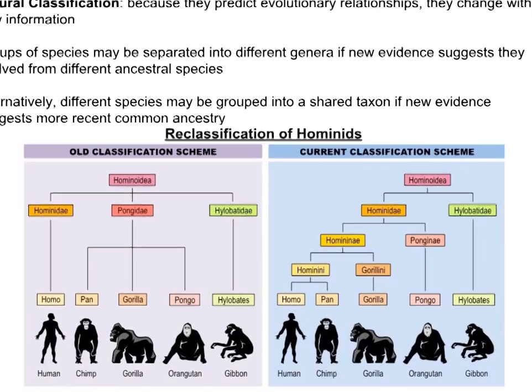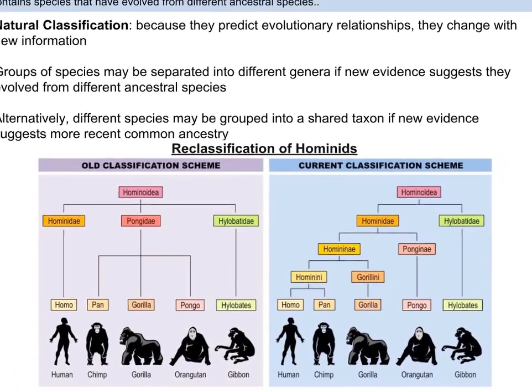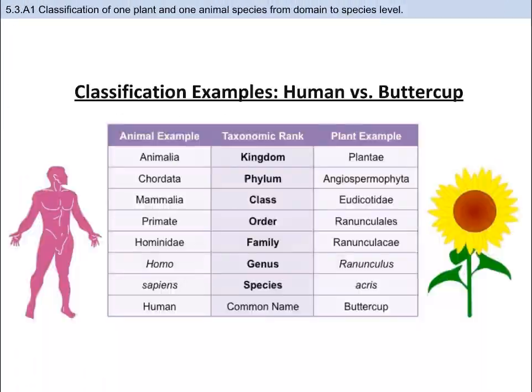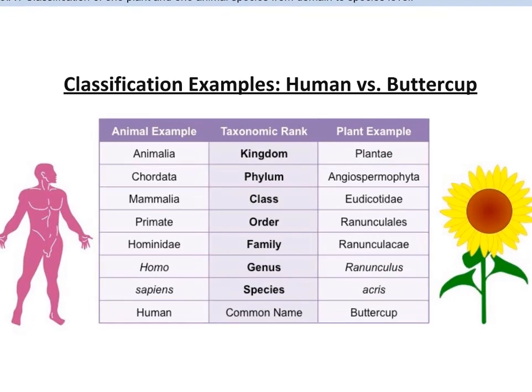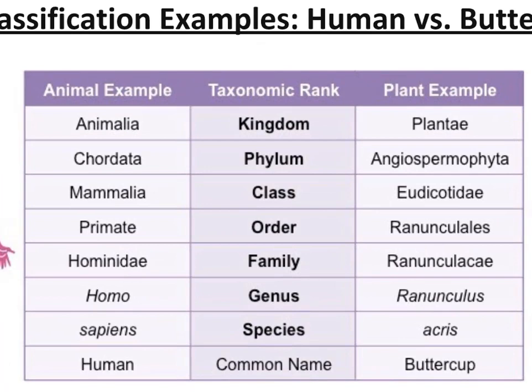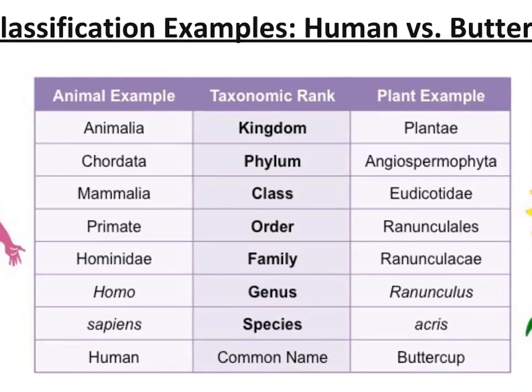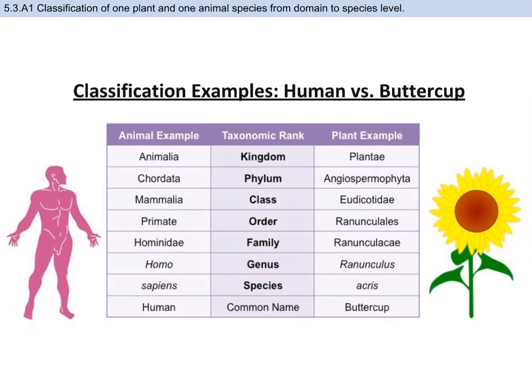One application you must know how to do is classify one plant and one animal from kingdom to species, and of course know its common name as well. Here I've provided you with two examples: humans and the buttercup. I recommend that you pick your favorite plant and favorite animal and do the same — it will help you remember when assessment time comes. You should pause it here and go do this.